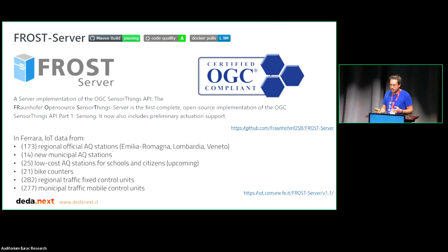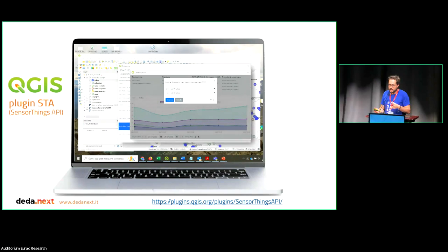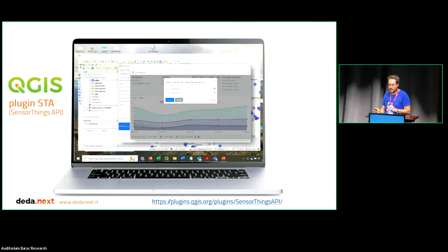The SensorThings API server is the FROST server, developed by the Fraunhofer Institute, which has wide support, is open source, and is continuously under development. And finally, we needed to access this data in the fastest, widest, and most open way possible. So we decided to develop a plugin for QGIS that is able to connect to a SensorThings API endpoint.